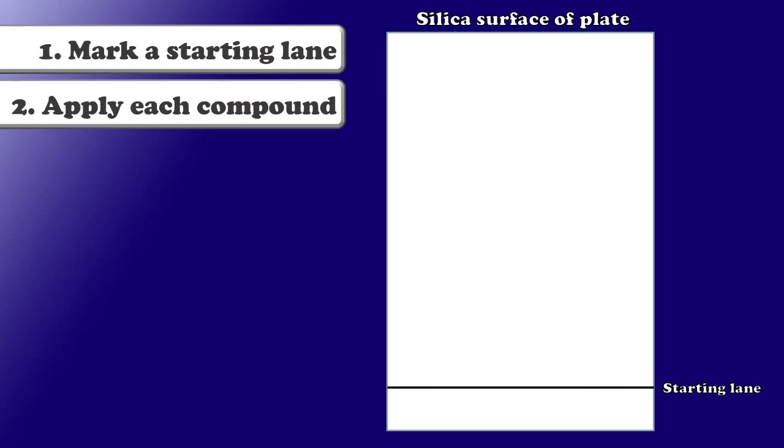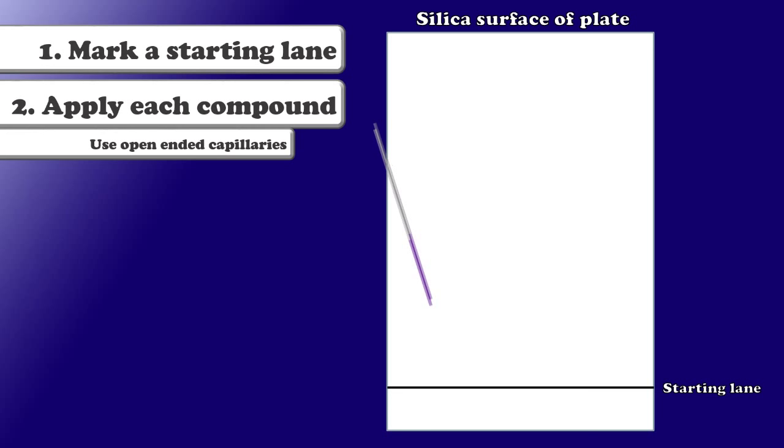The next step in the process is to apply our compounds to the plate. Now, this is often done using small glass capillaries, which we can fill with solutions of our compounds in a volatile solvent, such as methanol. We use open-ended capillaries so that we can draw the liquid in through capillary action and also expel it from the capillary simply by touching it to the surface of the silica plate. So I'm going to spot one compound here on the left side of my plate.